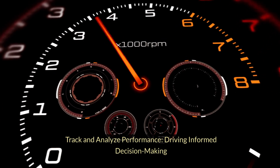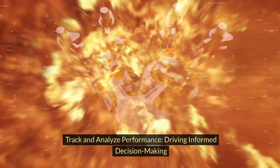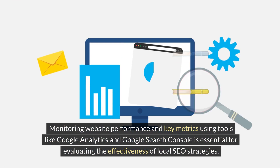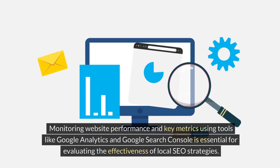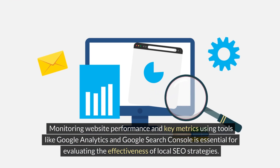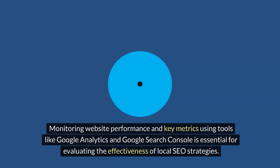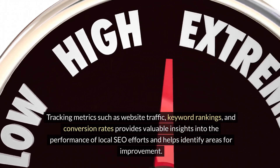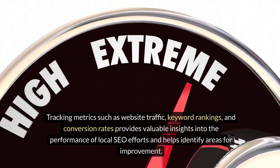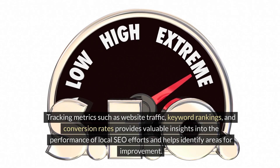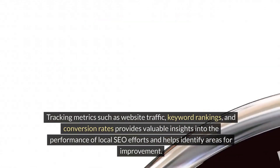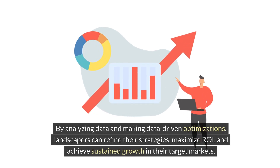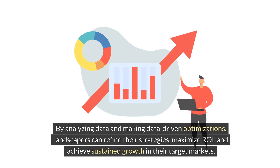Track and analyze performance — driving informed decision making. Monitoring website performance and key metrics using tools like Google Analytics and Google Search Console is essential for evaluating the effectiveness of local SEO strategies. Tracking metrics such as website traffic, keyword rankings, and conversion rates provides valuable insights into the performance of local SEO efforts and helps identify areas for improvement. By analyzing data and making data-driven optimizations, landscapers can refine their strategies, maximize ROI, and achieve sustained growth in their target markets.